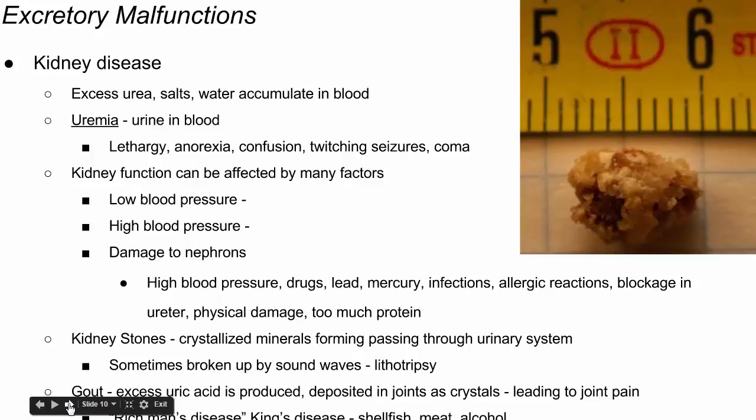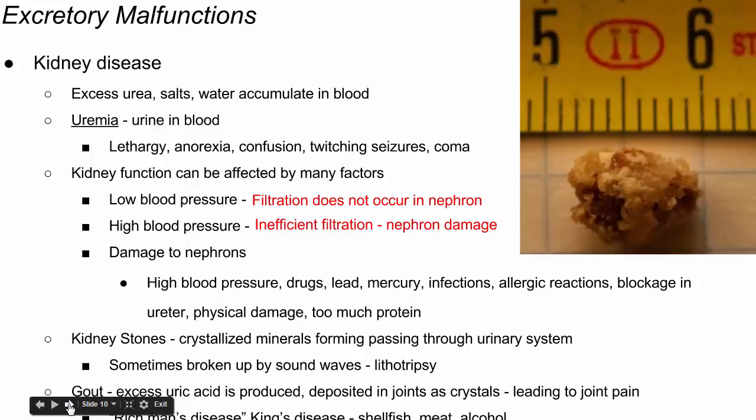Why do the kidneys not function properly? There are many different reasons. Sometimes low blood pressure can result in the kidneys not working properly because the nephron filtrate is not forced out through the glomerulus into the Bowman's capsule. If blood pressure is lower, not enough plasma and other substances are filtered out. At the same time, high blood pressure can damage the kidneys, leading to inefficient filtration and damaging the tubules of the nephron because of that high pressure.